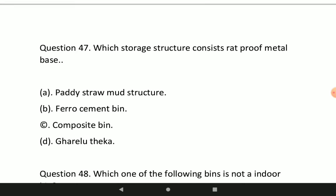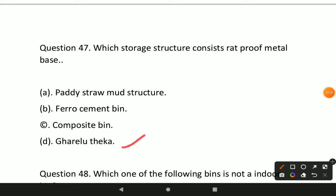Next question: which storage structure consists of a rat-proof metal base? Option D will be the correct — Gharelu Theka is the storage structure that consists of a rat-proof metal base.